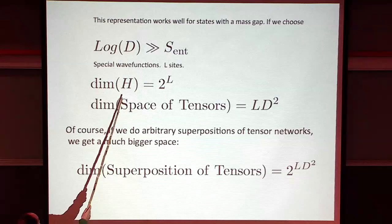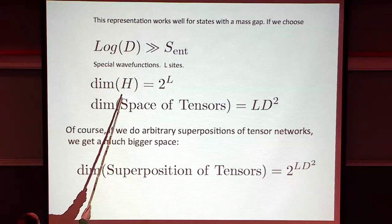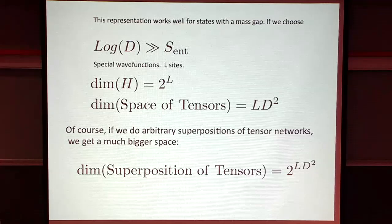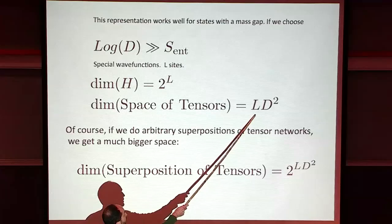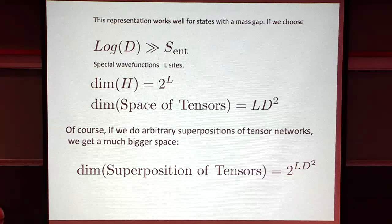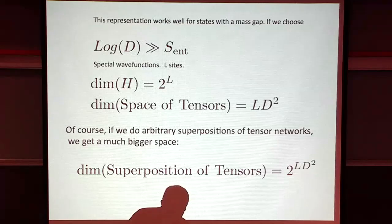The dimension of the Hilbert space of this system is 2 to the L, where L is the number of spins in the closed chain. The dimension of the space of tensors is L times D squared - that's the number of parameters in this ansatz for the wave function. So we're exploring a particular subspace of the Hilbert space of the original system.